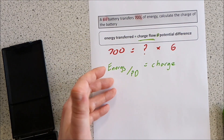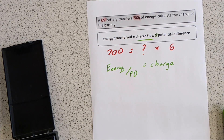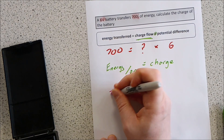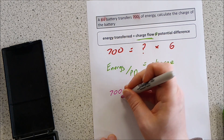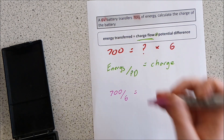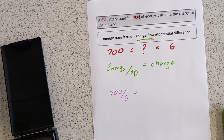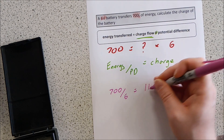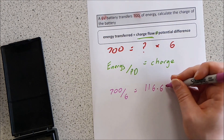Then we just put the numbers in and work it out. Energy, we know that's 700. Potential difference, we know that's 6. So that gives us a charge of 116.67.